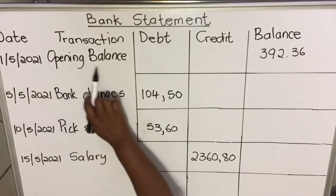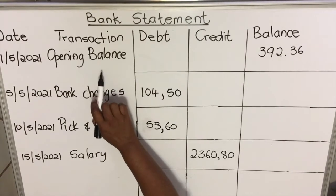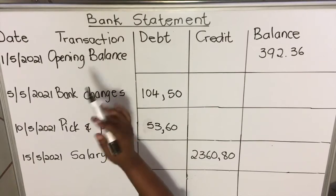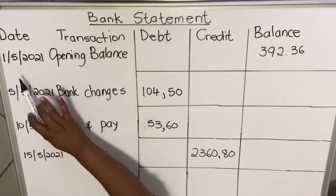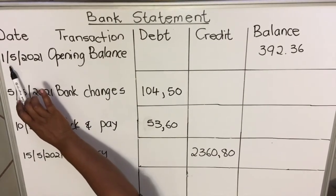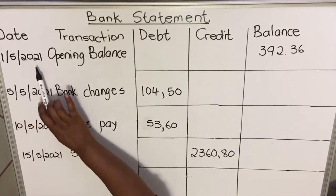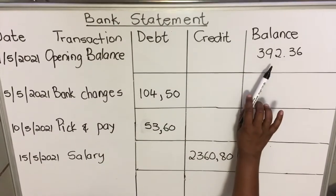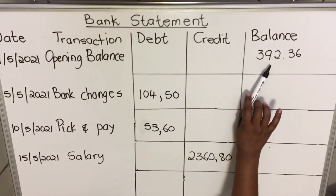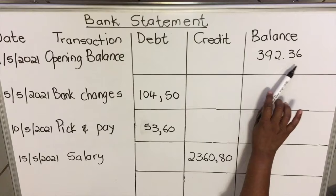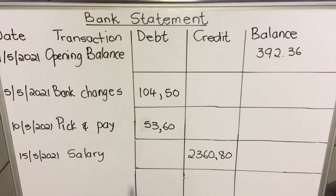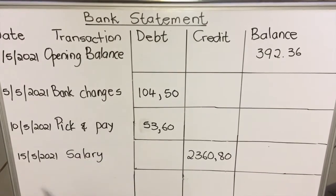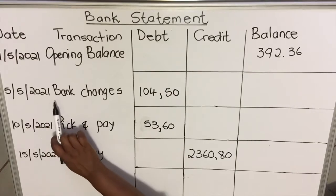Then you have the opening balance. The opening balance is the amount that you had last month that you start the new month with. So on the first or fifth, that's your opening balance — and in this example the opening balance is R392.36.